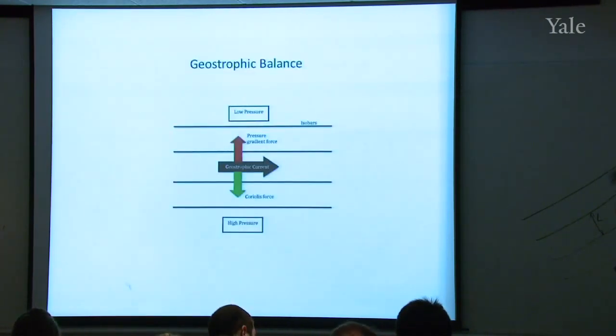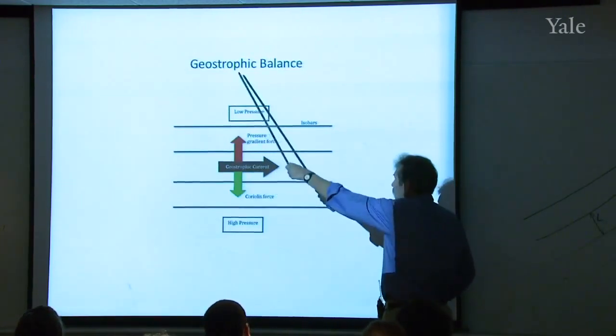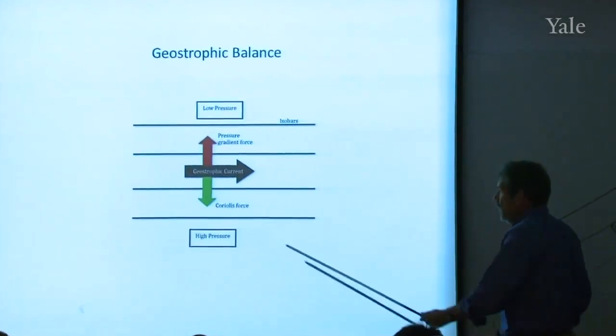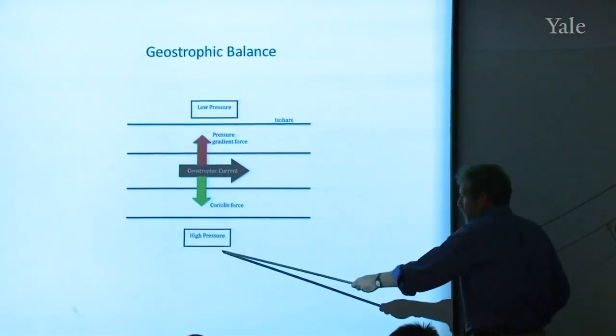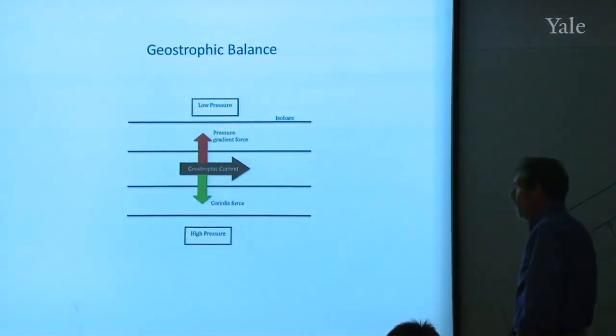Here's a little cartoon then describing what I mean by geostrophic balance. So if I have, this is a plan form view. So I'm looking down at the surface of the earth, north, south, east, west. And if there happens to be high pressure to the south on this particular day and low pressure to the north,